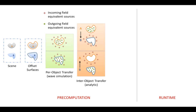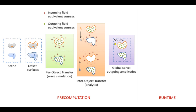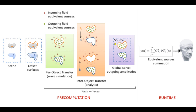Pairwise acoustic coupling between objects is then modeled analytically using the same equivalent source formulation, yielding inter-object transfer functions. Finally, we solve a global system that captures all orders of interactions between the objects, yielding the strengths of all outgoing equivalent sources. At runtime, we sum the contributions of outgoing equivalent sources for all objects, yielding the response at a moving listener in real time.